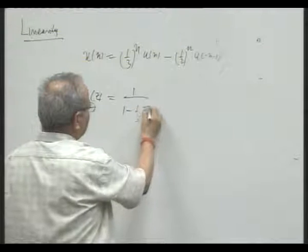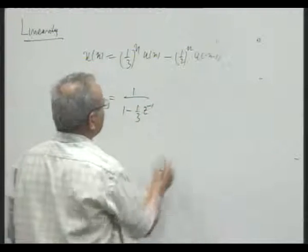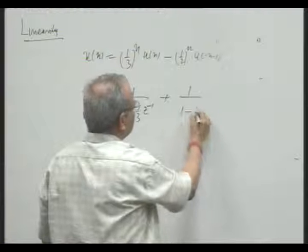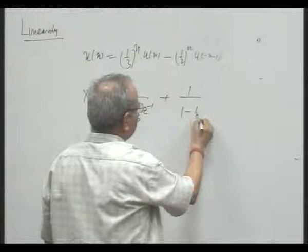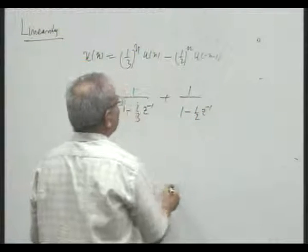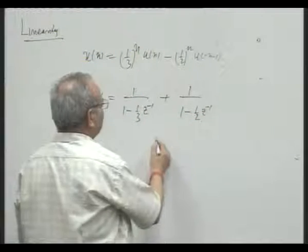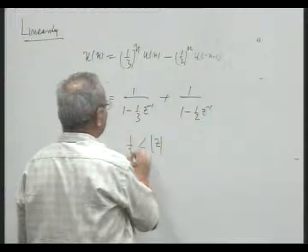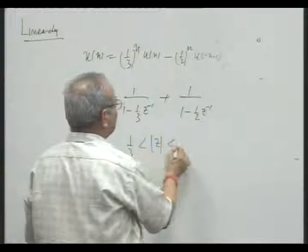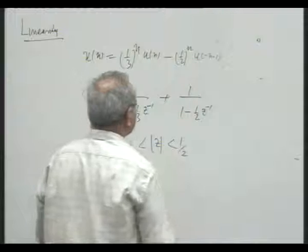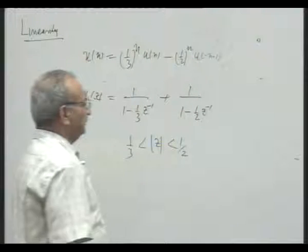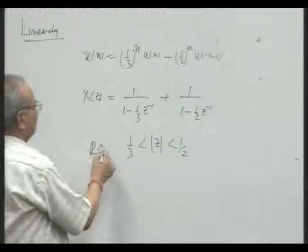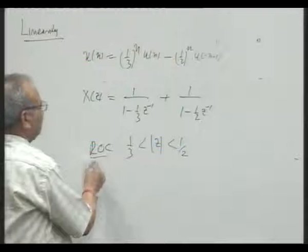Consider 1 minus 1/3. The ROC will be more than 3 raised to power minus 1, meaning mod z greater than 3. But then 1/3 is less than half. This will be the ROC, and this is the power in this case.